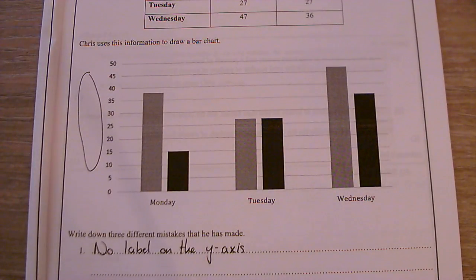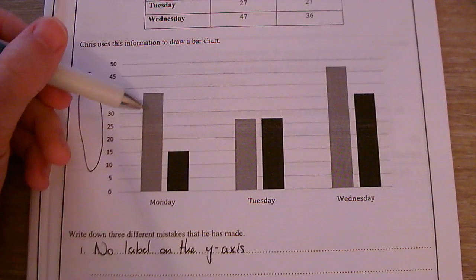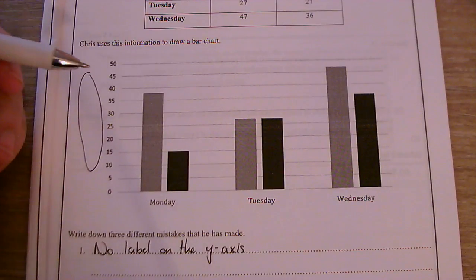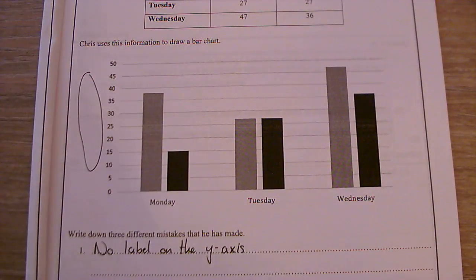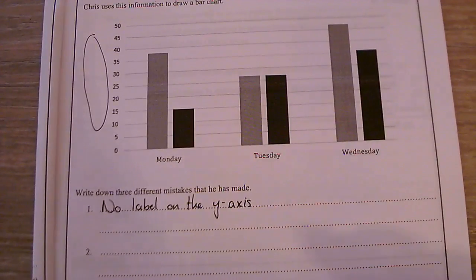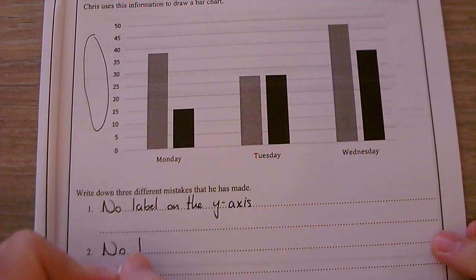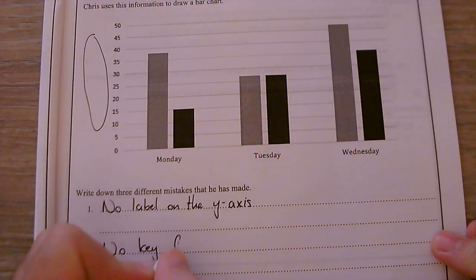The next thing I notice is there are two bars for each day. How do I know which is which? Which of these is going to be the sale of food and which of them is going to be the sale of drink? He needs to write a key. So that is my next mistake. There is no key for the bars.